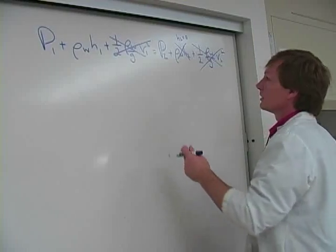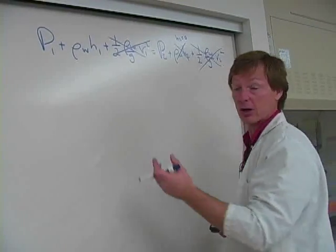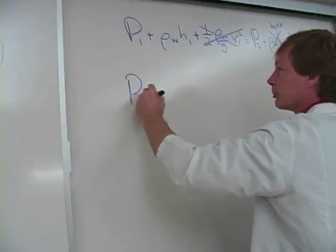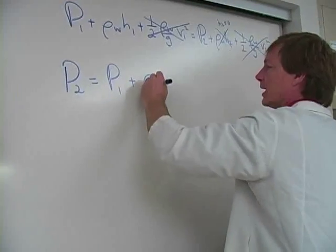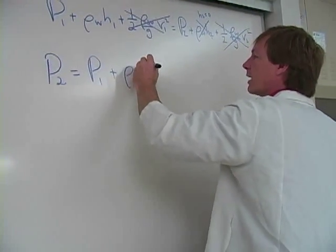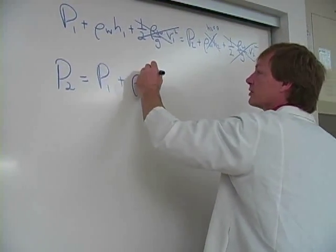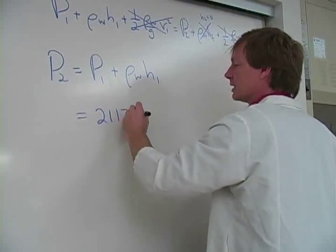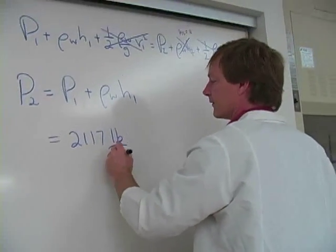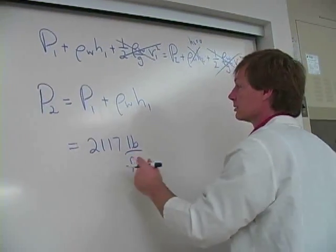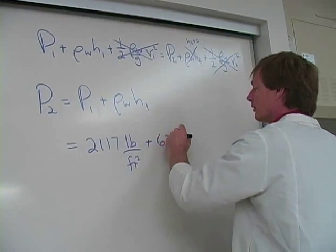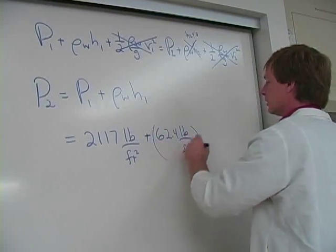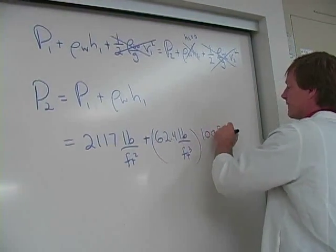It's just H1. But I've already got my problem solved. P2 is all by itself. That's what I wanted. So I'll write it out here. Second pressure is equal to the first pressure plus the weight density of water times height 1, which is 2,117 pounds per square foot. That's sea level pressure.